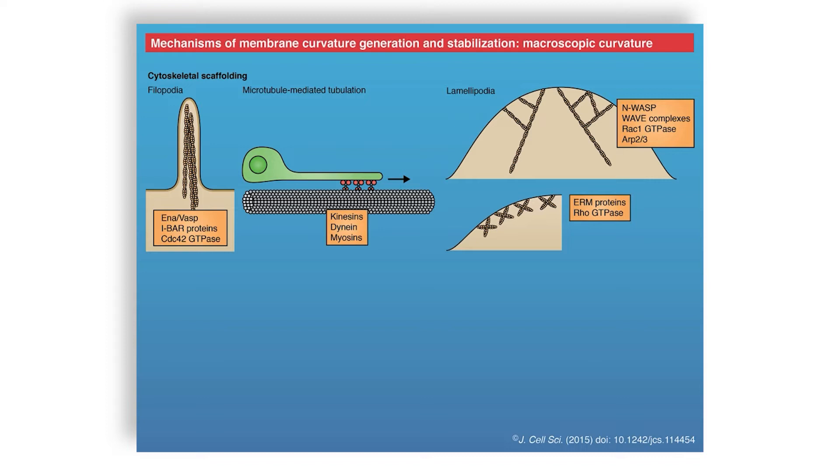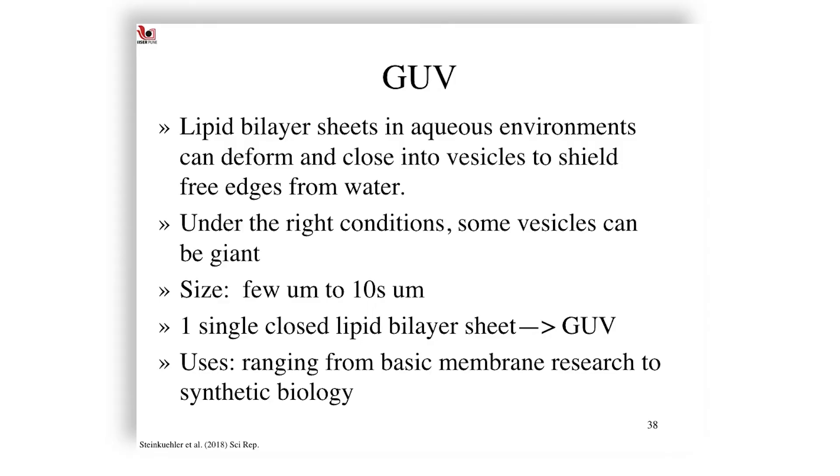Understanding the mechanics of these membranes requires a more purified system, a more easily manipulated, easily measured system. For that, giant unilamellar vesicles have proven to be serendipitously useful. These in fact consist of lipid bilayer sheets in aqueous environments that can deform and close into vesicles to shield the free edges from water. Under the right condition, some vesicles can be giant—giant means a few micrometers to tens of micrometers. One single lipid bilayer sheet is then defined as a giant unilamellar vesicle when it is of micrometer scale in diameter.